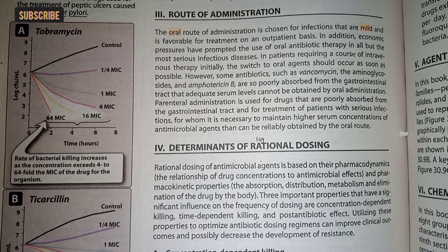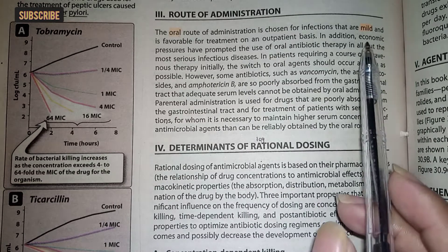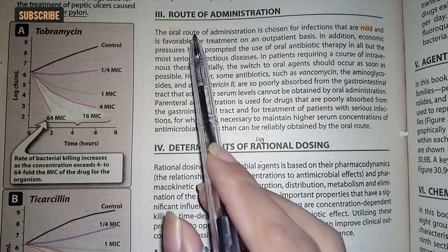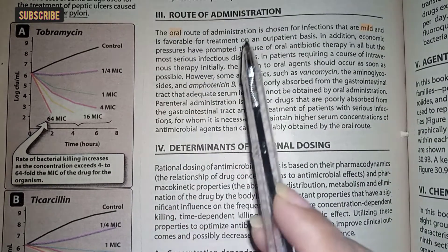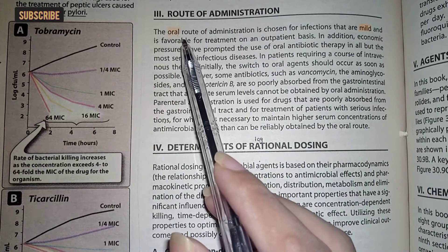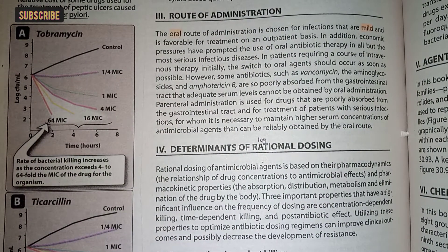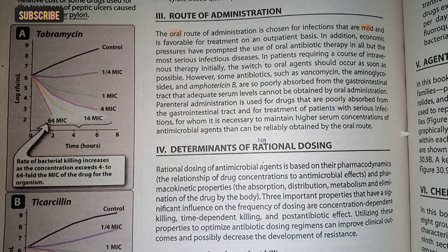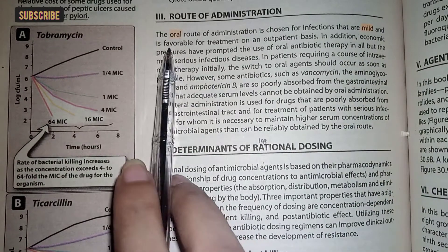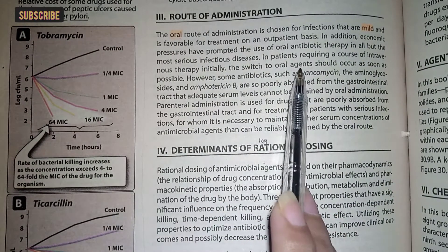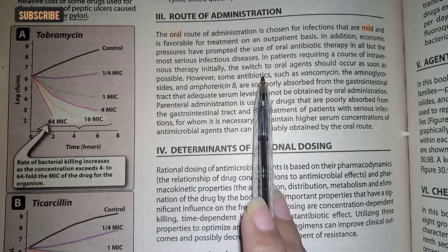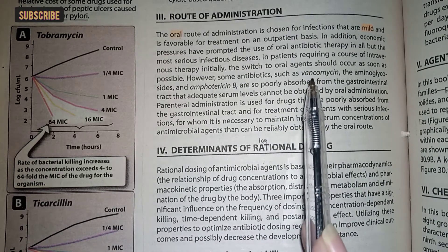Route of administration میں سب سے پہلے ہم یہ کوشش کریں کہ ہمیں پتا ہو کہ جو infection ہے وہ mild ہے یا severe ہے۔ اگر تو mild ہوگا infection تو ہم prefer کریں گے oral route کو۔ Oral route کو اس وجہ سے prefer کرتے ہیں کیونکہ اس میں drug جو ہوتی ہے وہ GI tract کے through جاتی ہے اور اس کی side effects کم ہوتی ہیں as compared to the intravenous route۔